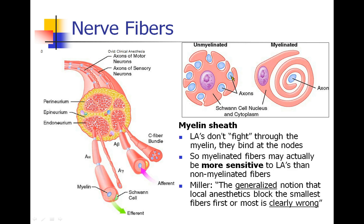Axons are surrounded by myelin, an insulating substance. There is a misconception that unmyelinated fibers have no myelin at all — in fact, unmyelinated fibers are still surrounded by myelin from Schwann cells, just not tightly wrapped. Myelinated axons are surrounded by layer upon layer of myelin, while unmyelinated axons are only loosely surrounded.